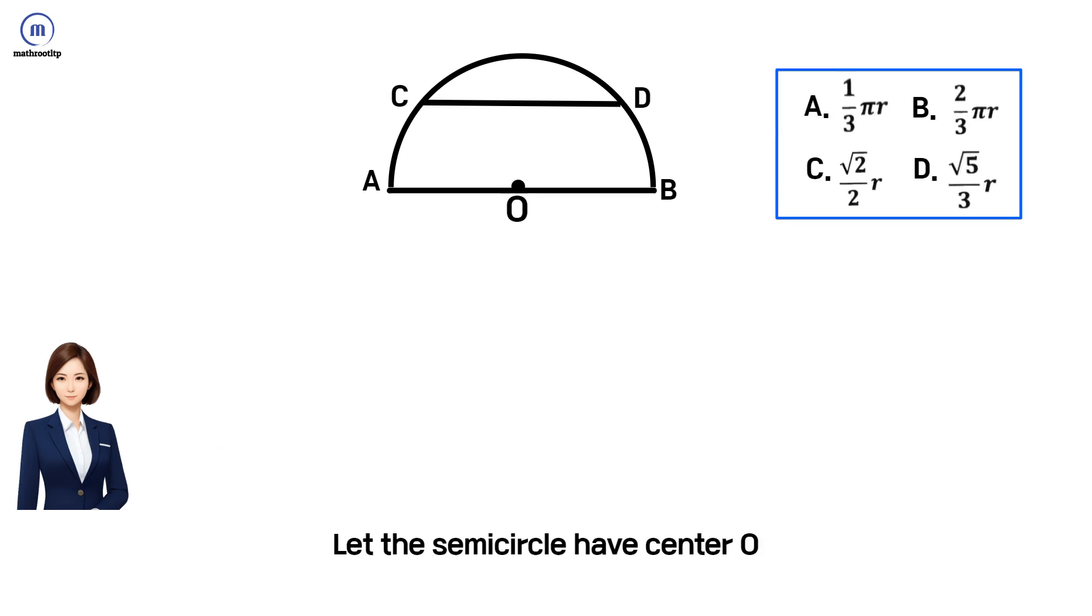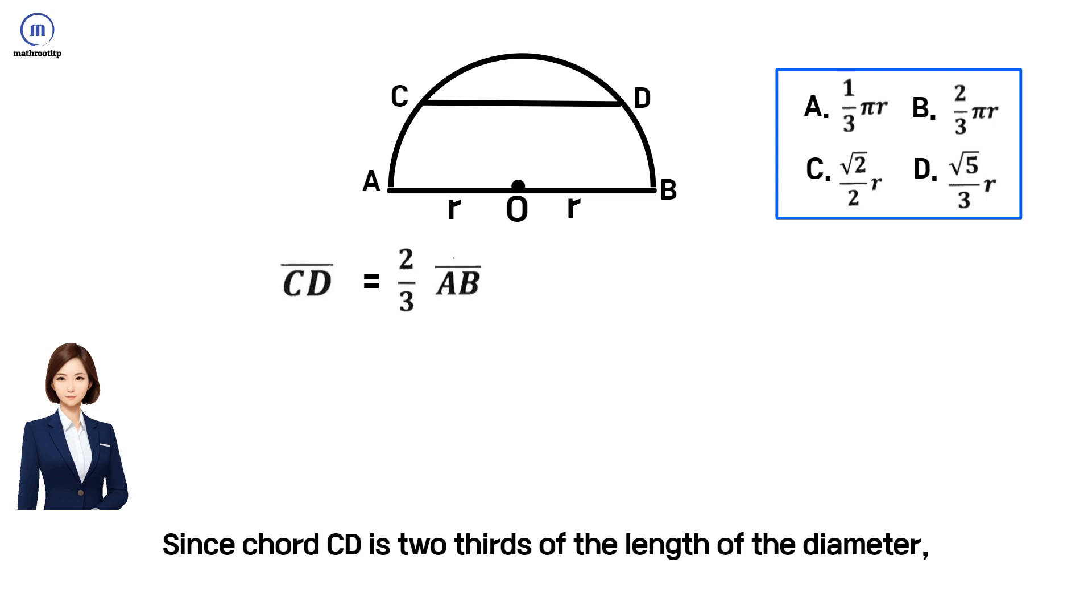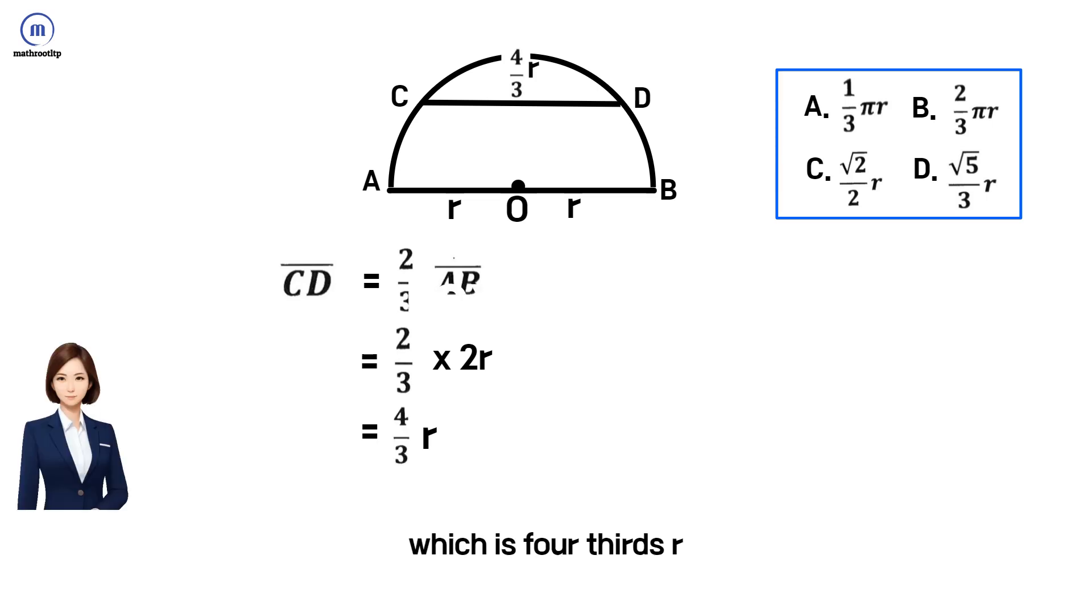Let the semicircle have center O. The diameter AB has length 2r. Since chord CD is two-thirds of the length of the diameter, CD is equal to two-thirds times 2r, which is four-thirds r.